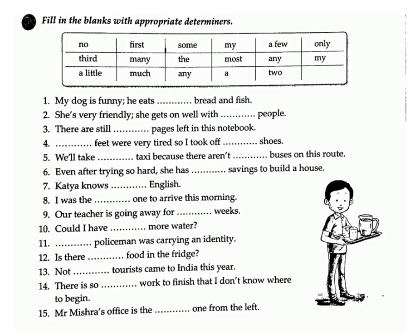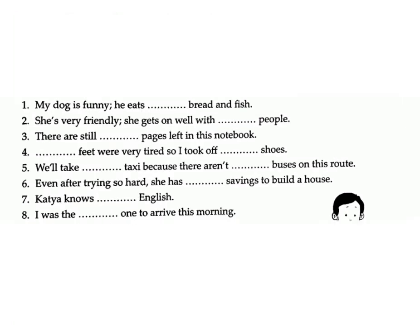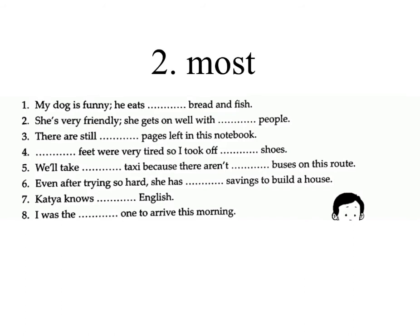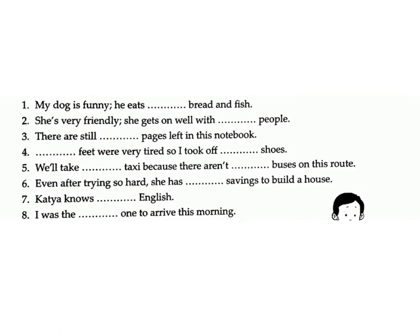Exercise B: Fill in the blanks with appropriate determiners. Options: first, sum, my, a few, only, third, many, the, most, any, a little, much, any. (1) 'My dog is funny; he eats only bread and fish.' (2) 'She's very friendly; she gets on well with most people.' (3) 'There are still a few pages left in this notebook.' (4) 'My feet were very tired so I took off my shoes.'